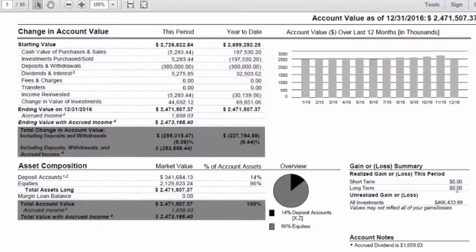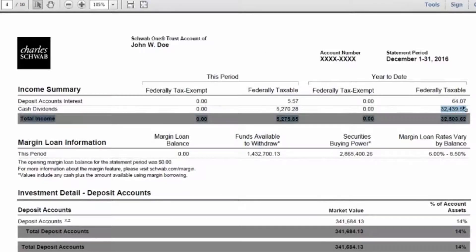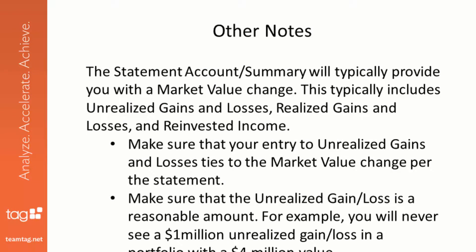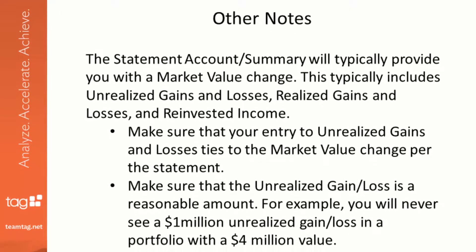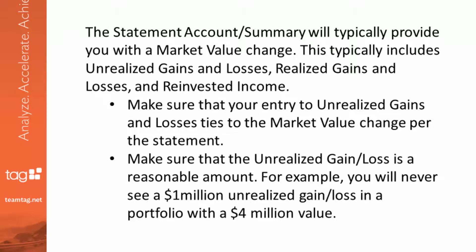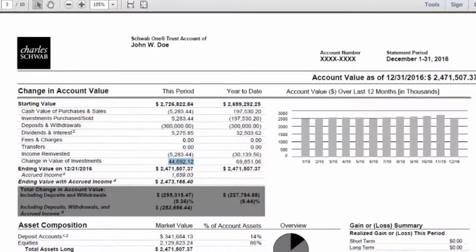Charles Schwab does not have year-to-date activity, so just make sure that you capture all that information. You'll also want to reconcile the year-to-date income and expenses to ensure all income and expenses have been entered — whenever you do your reconciliations, make sure these numbers tie to your QuickBooks file, as this makes 1099 reconciliation much easier during tax season. The statement account summary will typically provide you with a market value change that usually includes unrealized gains and losses and reinvested income, so make sure the entry to unrealized gains and losses ties to the market value change per the statement and that it's a reasonable amount. For example, you would never see a $1 million unrealized gain and loss in a portfolio with a $4 million value.